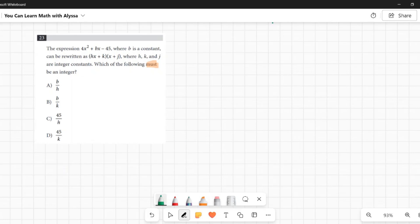Okay, this is a conceptual one. This section seems to have quite a few of those. Let's think about FOIL. We have to think about multiplying binomials, how that works, and what is the result when we do that. So 4x squared plus bx minus 45, and it can be factored as hx plus k times x plus j.